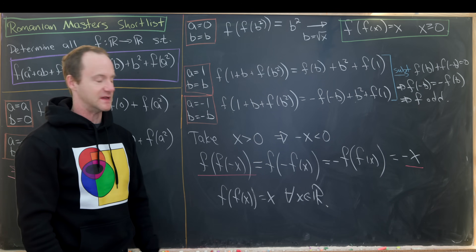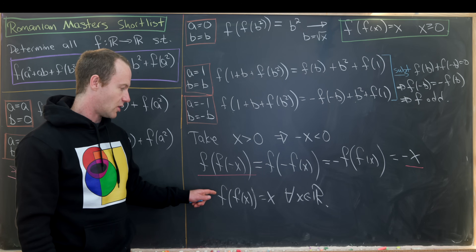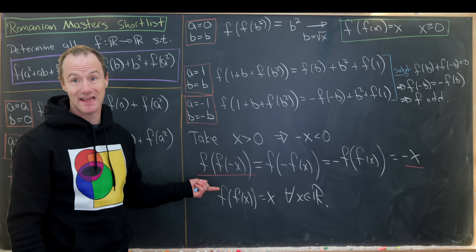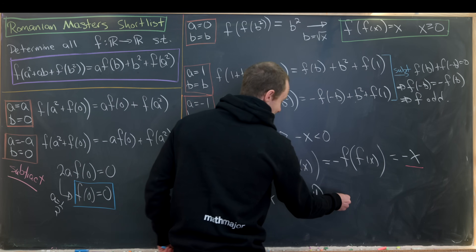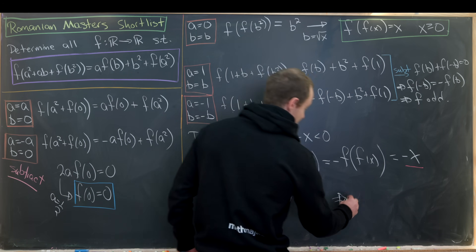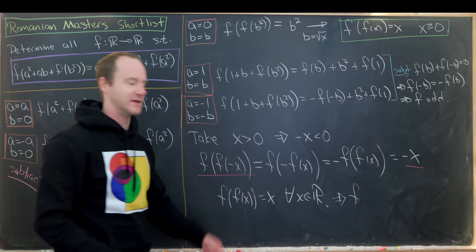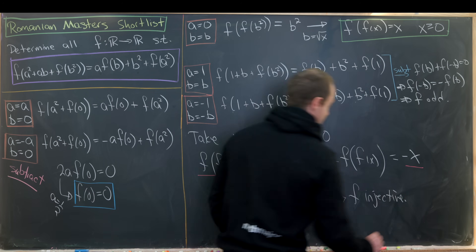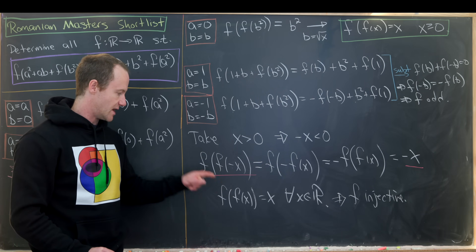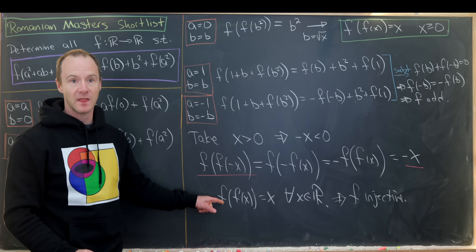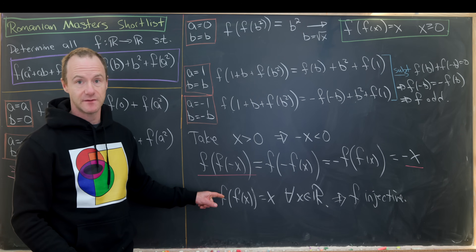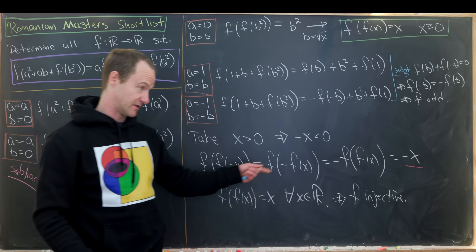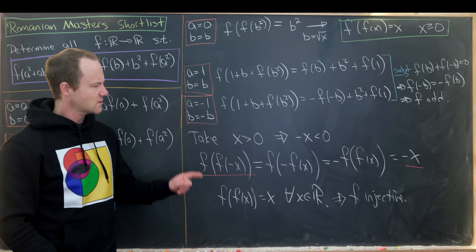This gives us a couple of useful pieces of information. Since f(f(x)) = x, f is an involution — f is its own inverse. A function with an inverse is bijective, meaning it's both injective (one-to-one) and surjective (onto). We'll need injectivity in an upcoming step.